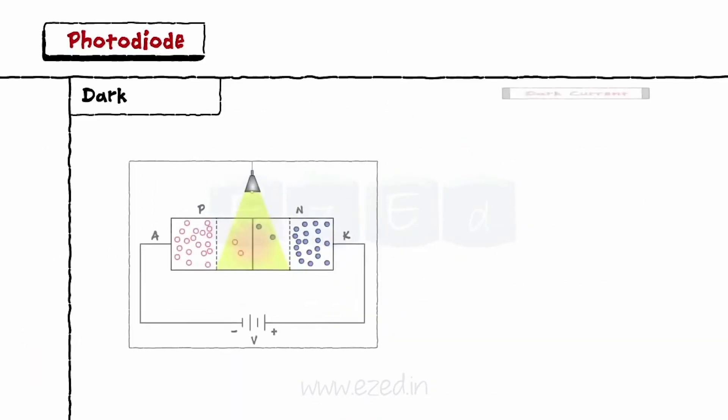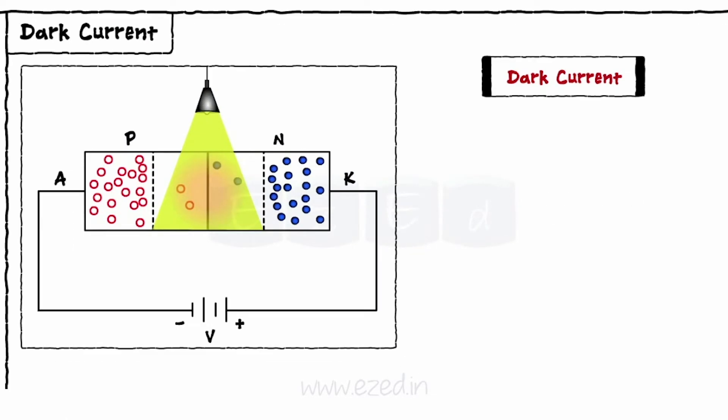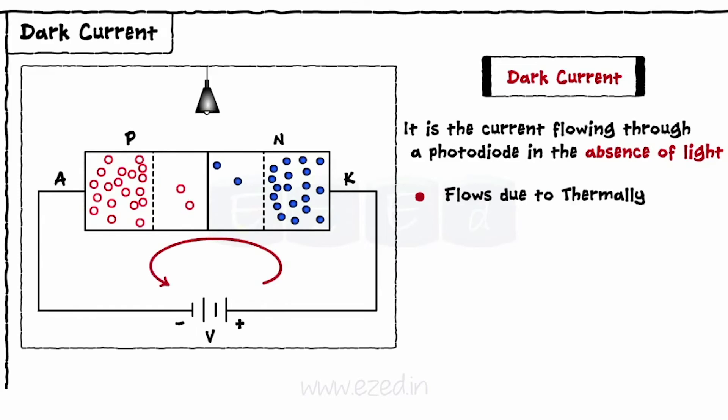What do we mean by dark current? It is the current flowing through a photodiode in the absence of light. Dark current flows due to the thermally generated minority carriers and hence increases with the increase in temperature.